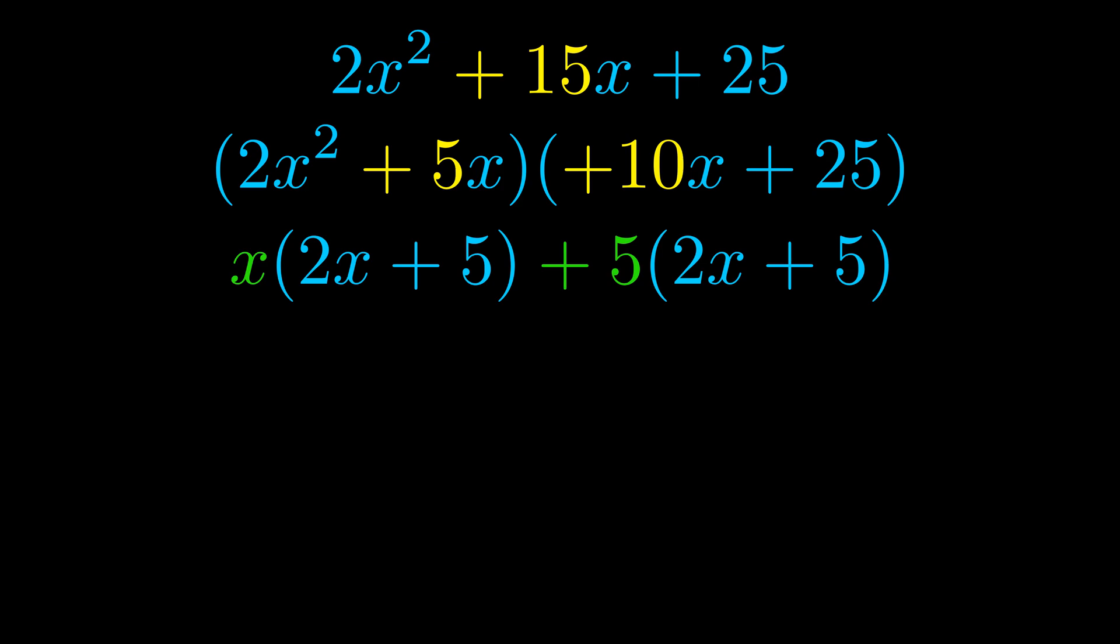Notice also how what remains inside of the parentheses is the same in both cases. The blue values are the same. Those blue values will become one of our factors and we will combine the two green values, the GCFs that we pulled out to get the other one. And that is our fully factored equation.